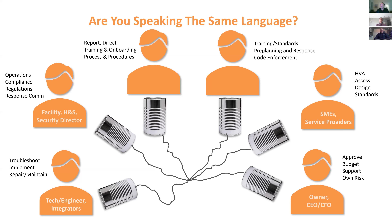We have CEOs, CFOs, and owners responsible for budgeting, planning, and approvals — without their detailed understanding of what they're approving and why, how can they put money in the right place to operate the building and protect people and assets? Then we have patients, visitors, staff, and guards — the first line of defense — who may report issues ranging from temperature problems to security concerns, and who are often the ones training and onboarding new people. All of that requires a lot of information and the ability to communicate effectively.